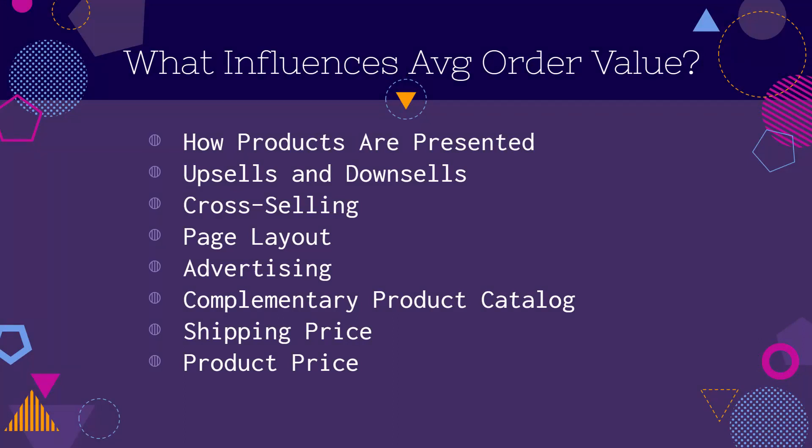We know we need to increase average order value, but how? If you just understand the definition — it's just the average amount that you take in per order — you can see how to take in more per order. You can sell more quantity, affect how products are presented, use bundling, feature products. But it's really all about adding upsells, adding downsells, having cross-sells, add-ons, premium add-ons, order bumps, different packages — different things that basically increase the amount the customer is spending. Having a complimentary product catalog definitely helps.